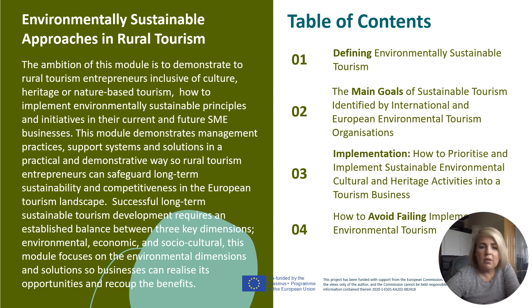Topic number one is defining environmentally sustainable tourism. Topic number two is the main goals of environmentally sustainable tourism, where we look at different European and international organizations and what they say. Then we look at the implementation — how to prioritize and implement sustainable environmental culture and heritage activities into a tourism business, and how to avoid failing implementation.